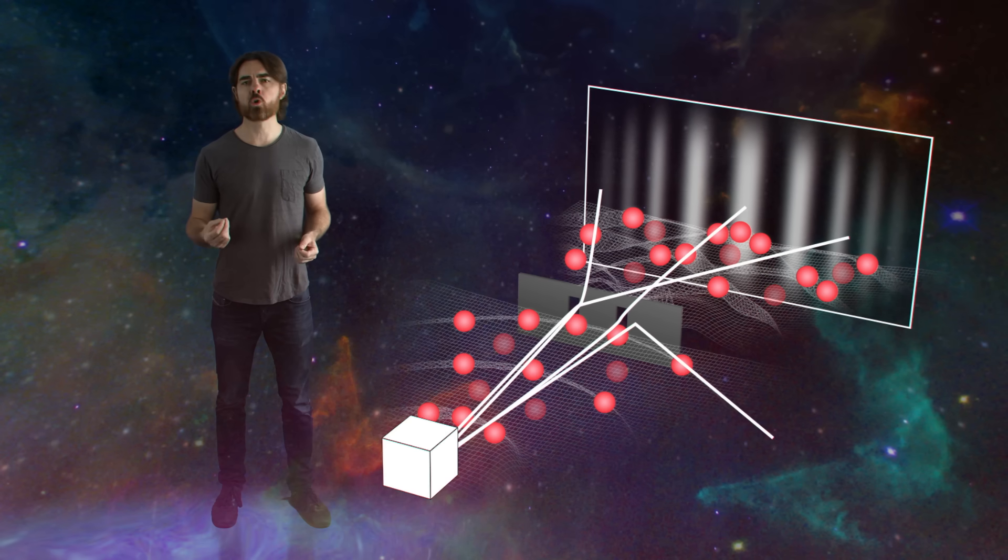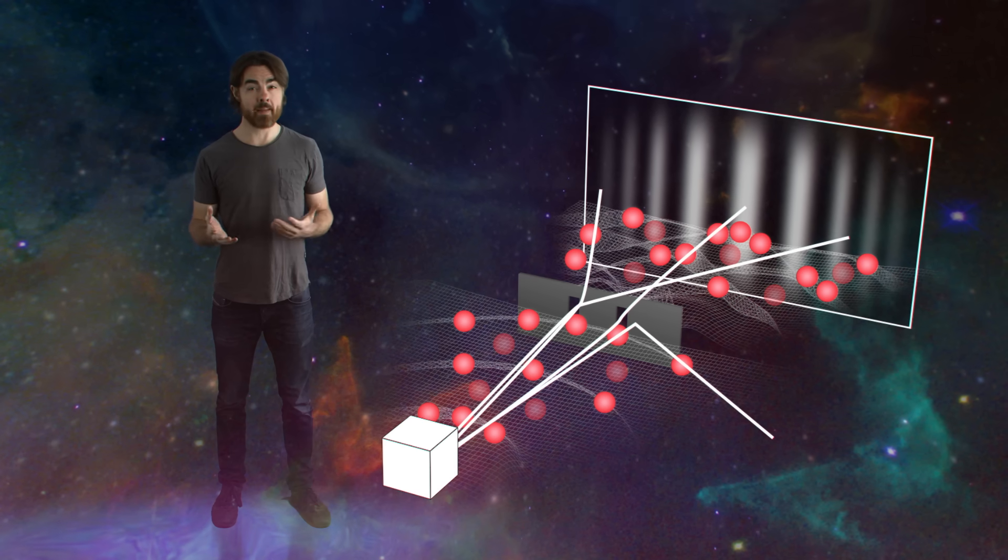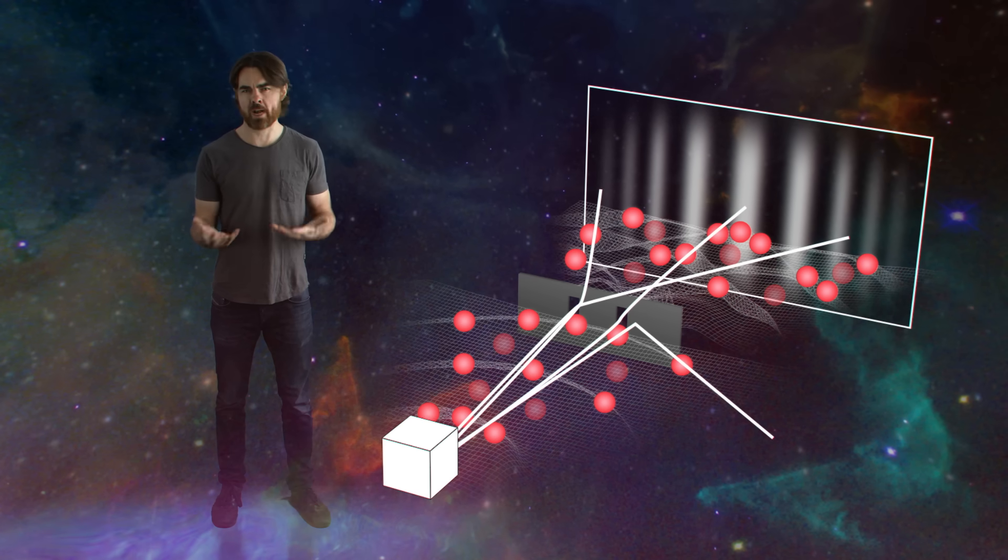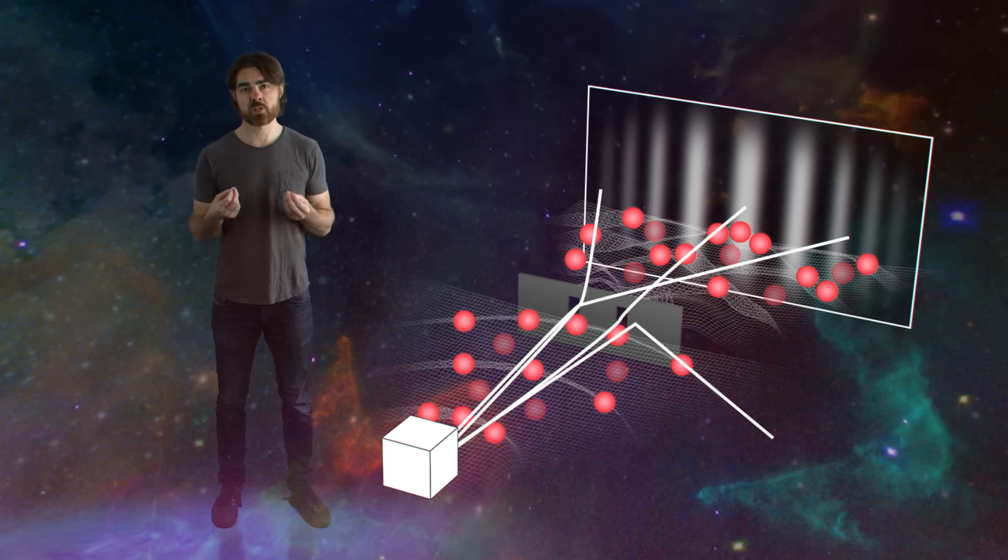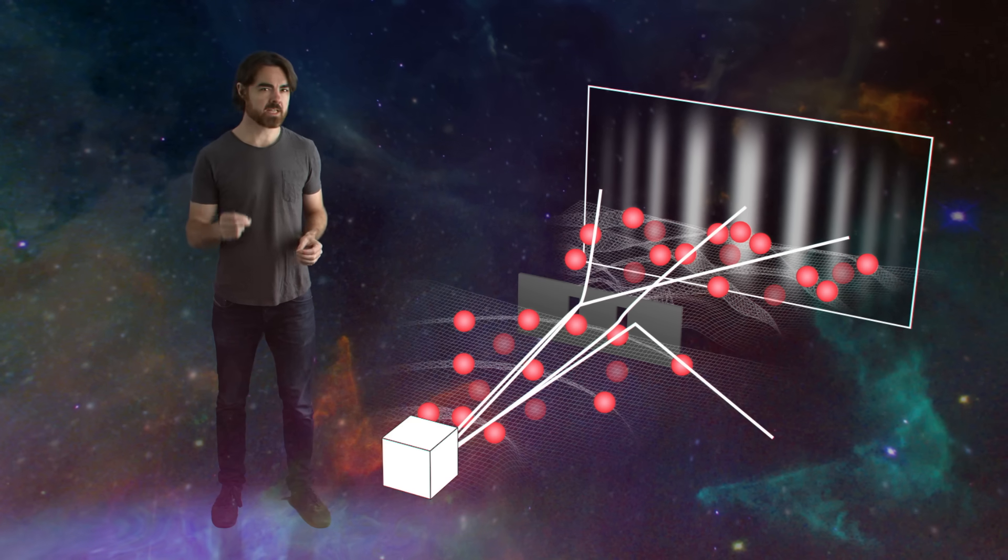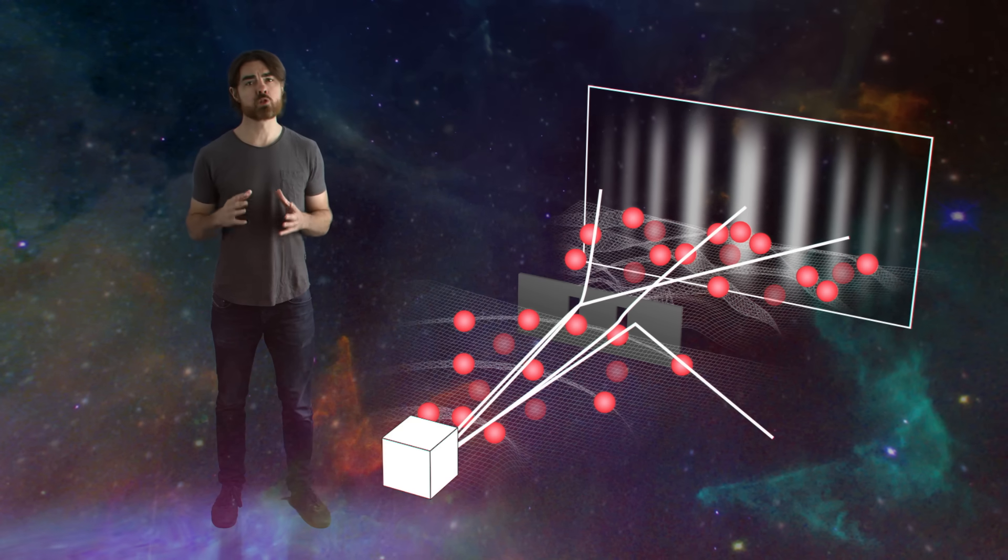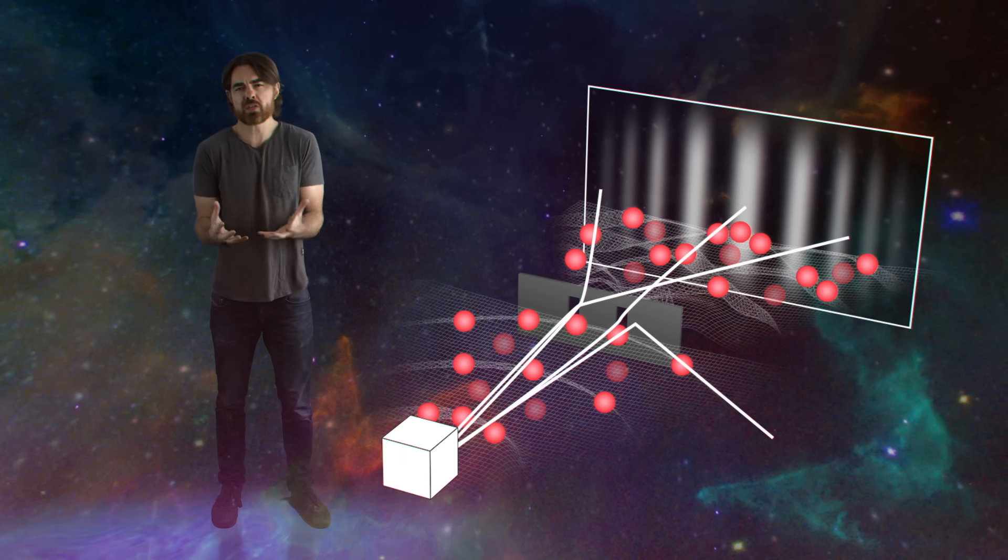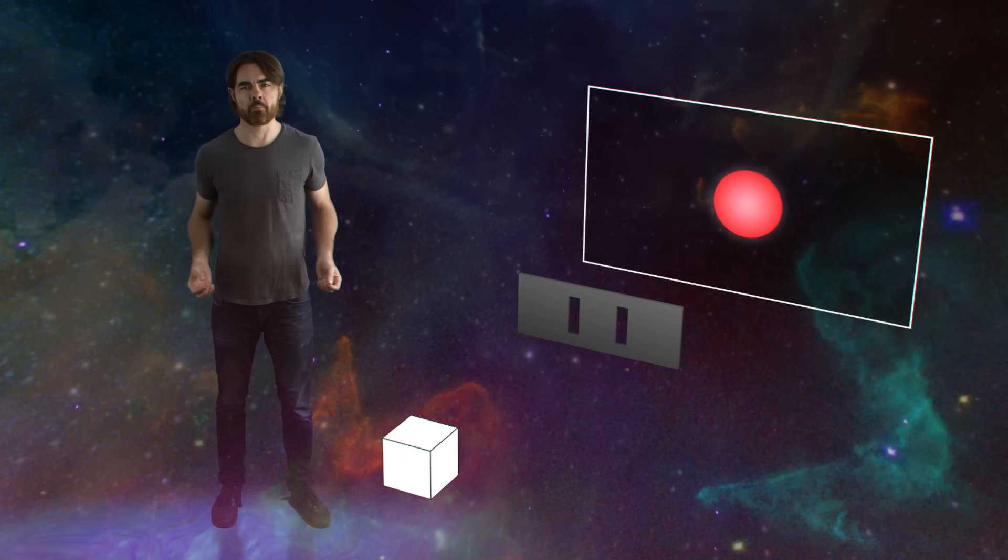It tries out all histories between launch and landing, and those many maybe histories somehow interact with each other to determine the most likely final destination when a measurement is made. In a sense, different possible superposed histories appear to converge on one final outcome. But what causes that convergence?